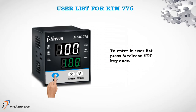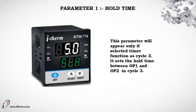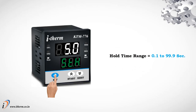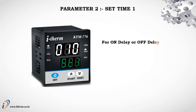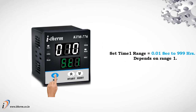User List for KTM 776. To enter the User List, press and release the Set key once. Parameter 1: Whole Time — appears only if timer function is Cycle 3. It sets the whole time between Output 1 and Output 2 in Cycle 3. Range: 0.1 to 99.9 seconds. Parameter 2: Set Time 1 — for On Delay or Off Delay, sets the time for Output 1. For Cycle 1, sets the Off Time; for Cycle 2, sets the On Time; for Cycle 3, sets the Forward Time for Output 1. Range: 0.01 seconds to 999 hours, depending on Range 1.